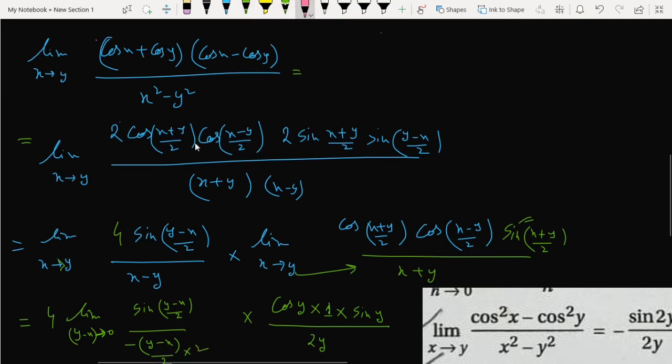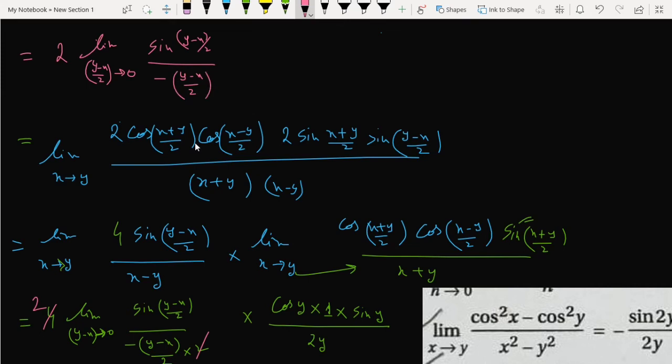Two cancels in this manner. So we can write (y-x)/2 times... it becomes sine y cos y divided by 2y. As we know that limit of sine x over x as x tends to 0 is 1, so we are making it this way.